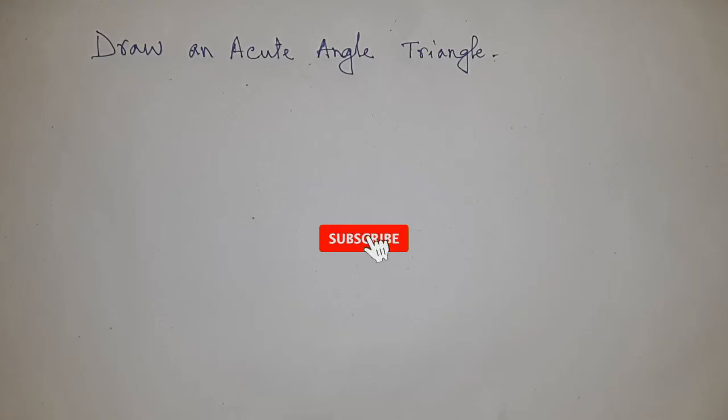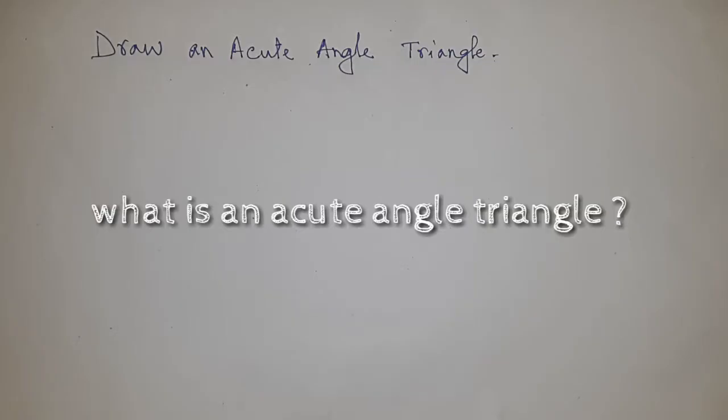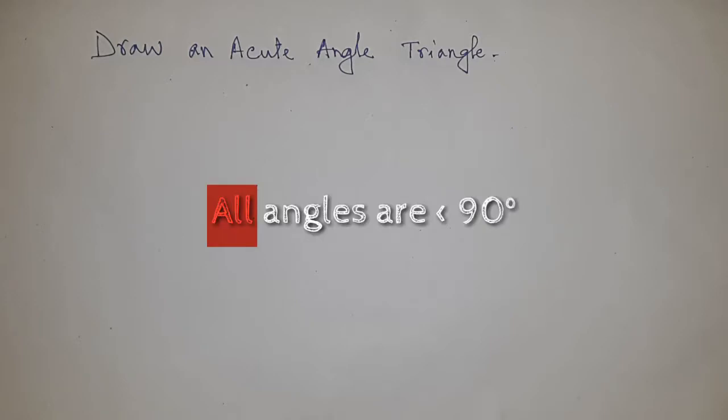Before starting the video, I have one request: please subscribe to the channel and press the bell icon for future video notifications. Now, talking about acute angle triangles - an acute angle triangle has all angles less than 90 degrees.